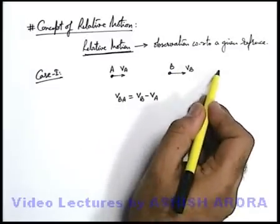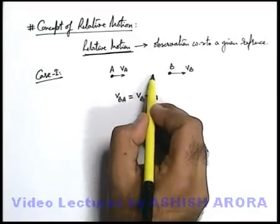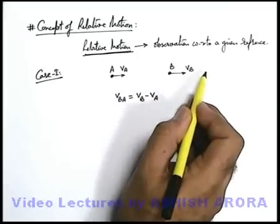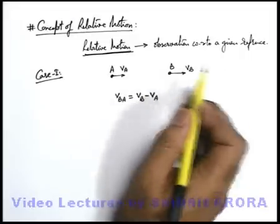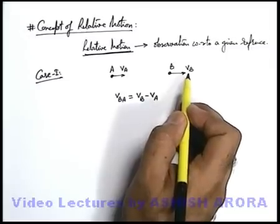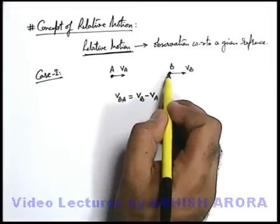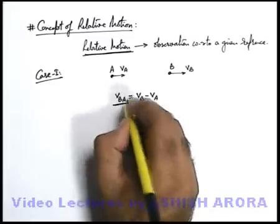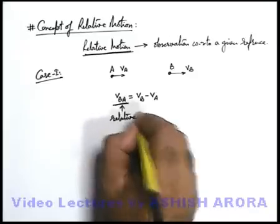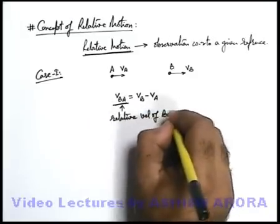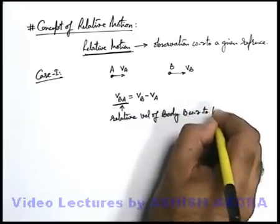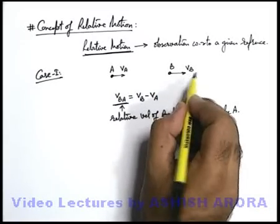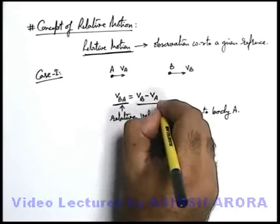Because if B will cover a distance v-B in one second, and A will cover a distance v-A in one second, then as measured by body A when we observe body B, the progress forward of B will be v-B minus v-A. So in one second, body B can be considered to progress by a distance v-B minus v-A with respect to body A. This v-BA we simply term as the relative velocity of body B with respect to body A. So always remember: when two bodies move in the same direction, the velocity of one body with respect to the other can be written as the difference of their velocities.